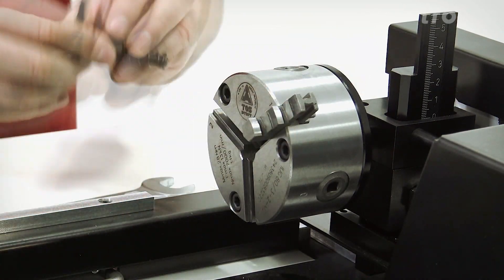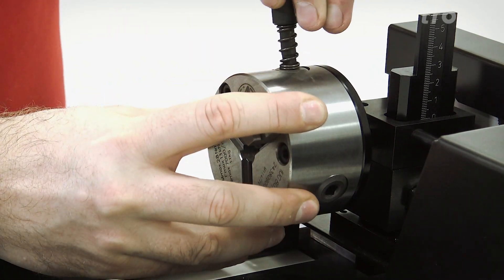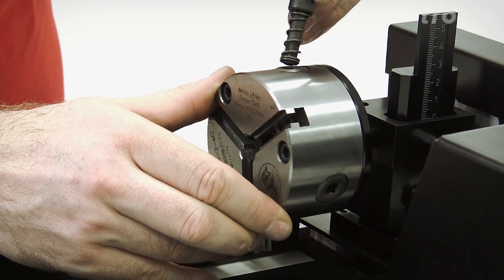Push in the jaw marked with a 1 until it stops. Turn the wheel again and do the same thing for jaw 2 and 3.